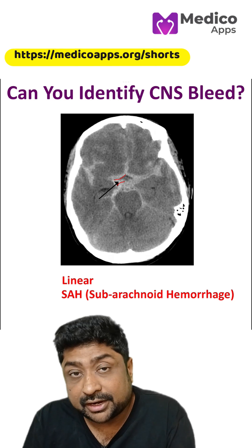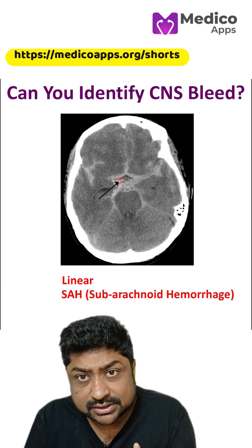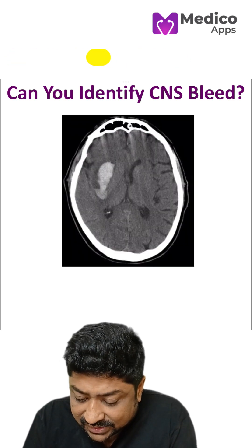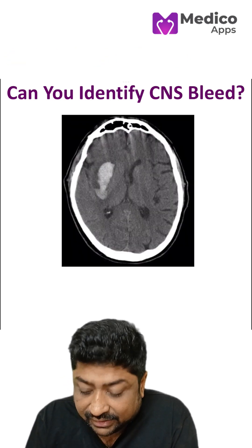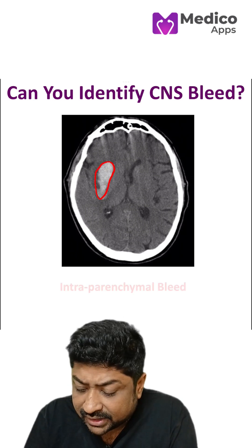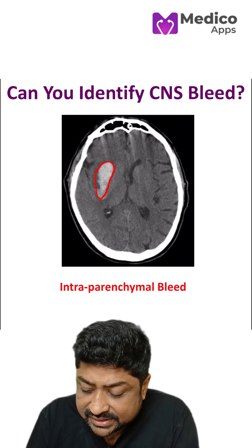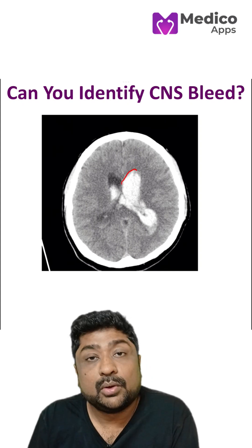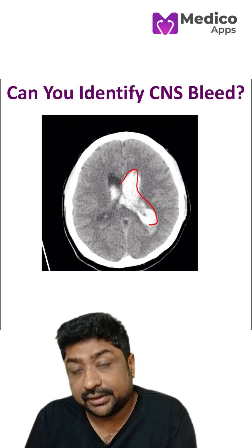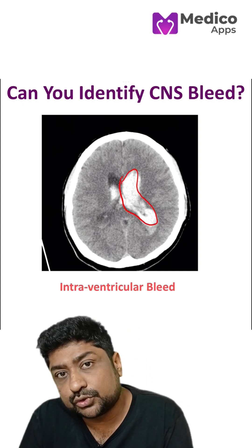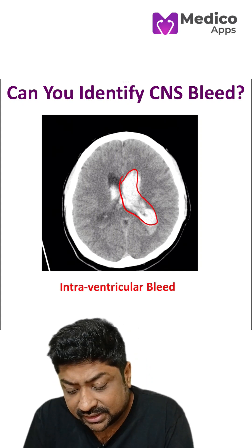So these three are important. Let's look at some other images. Here you can see an intra-parenchymal bleed — very easy to identify. Another very easy case is an intra-ventricular bleed. So these are five to six images which you should know for the examination.